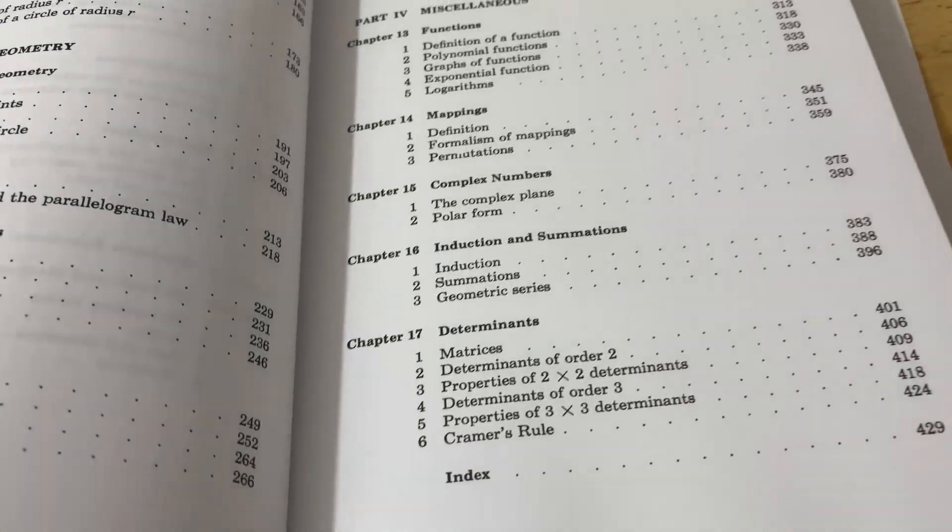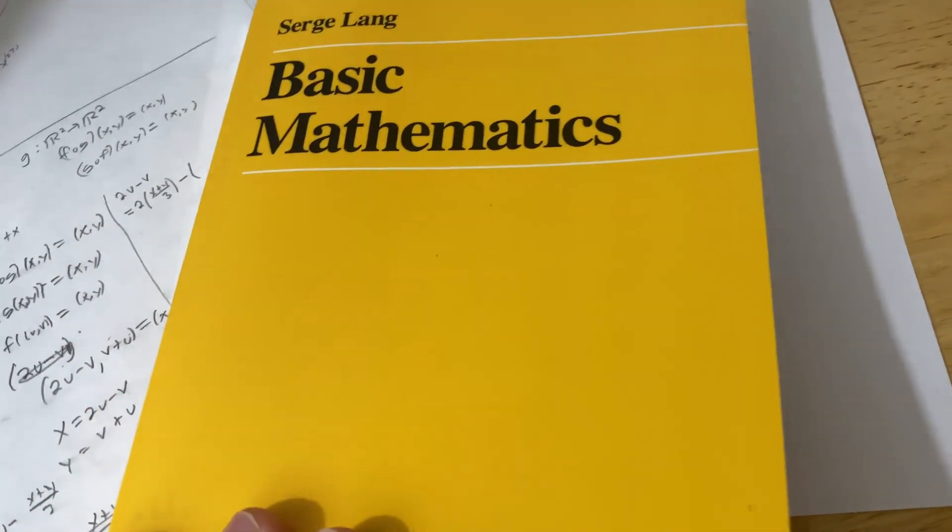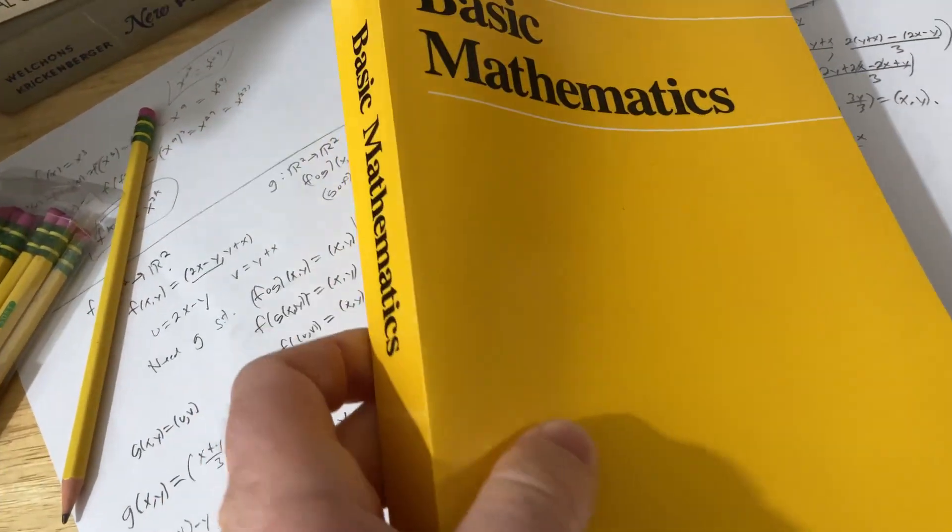So you can see there's one key component that is missing from this book, and that is the solutions. This book does not have solutions to any of the problems. In fact, I've done some of the problems. And here's some of them here. And you can see they don't even have answers next to the problem. So there are no answers to this book. So that I think is a big downside. That and the fact it's a paperback.